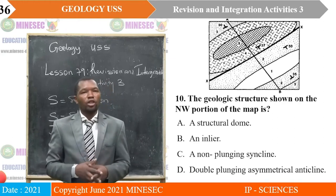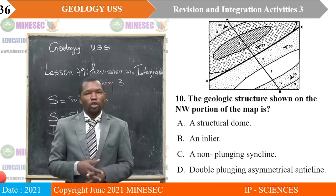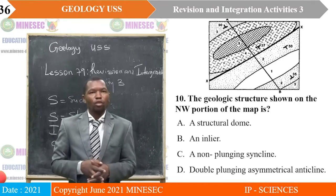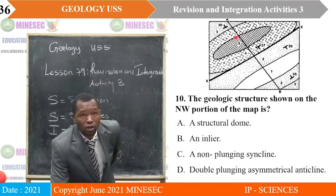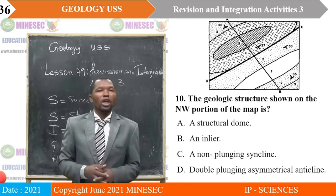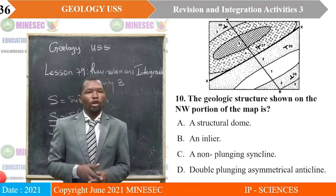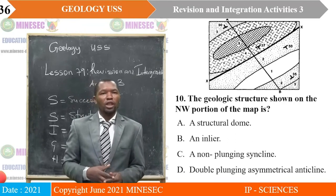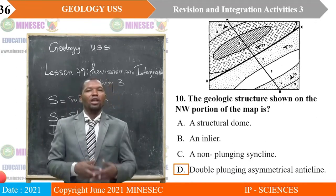Question ten is also related to this map. The geologic structure shown on the north-west portion of the map — at the north-west portion you can see a dip on this bed away and another dip on the same bed away, so dips are away. A — a structural dome; B — an inlier; C — a non-plunging syncline; D — double plunging asymmetrical anticline. The correct answer is D, a double plunging asymmetrical anticline.